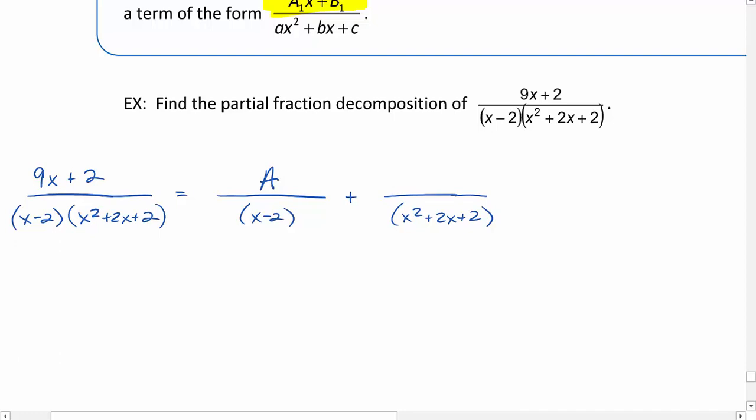In the second one, our denominator is quadratic, so our numerator needs to be linear. I don't want to start with a because I already used a in my first fraction, so this is going to be bx plus c. And once we get it all set up, everything else is the same.